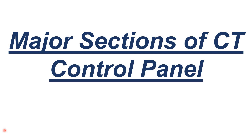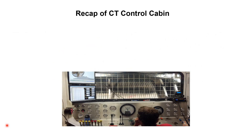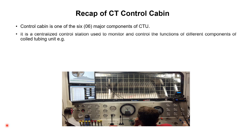Here we will discuss the major sections of the city control panel. To understand them, we will recap our tutorial of the city control cabin. The city control cabin is one of the six major components of coil tubing units. It is a centralized control station used to monitor and control the functions of different components of the coil tubing unit.